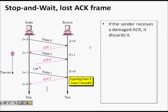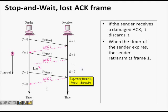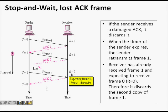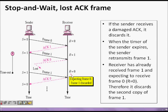If the sender receives a damaged or lost ACK, when the timer expires it retransmits the frame. The receiver, having already received that frame, discards the duplicate. But it still sends ACK 0. Why is this ACK important? If it does not send it, the timer will expire again and frame one will keep repeating. So even though the receiver is discarding frame one, it must send ACK 0 to inform the sender to proceed with frame zero.